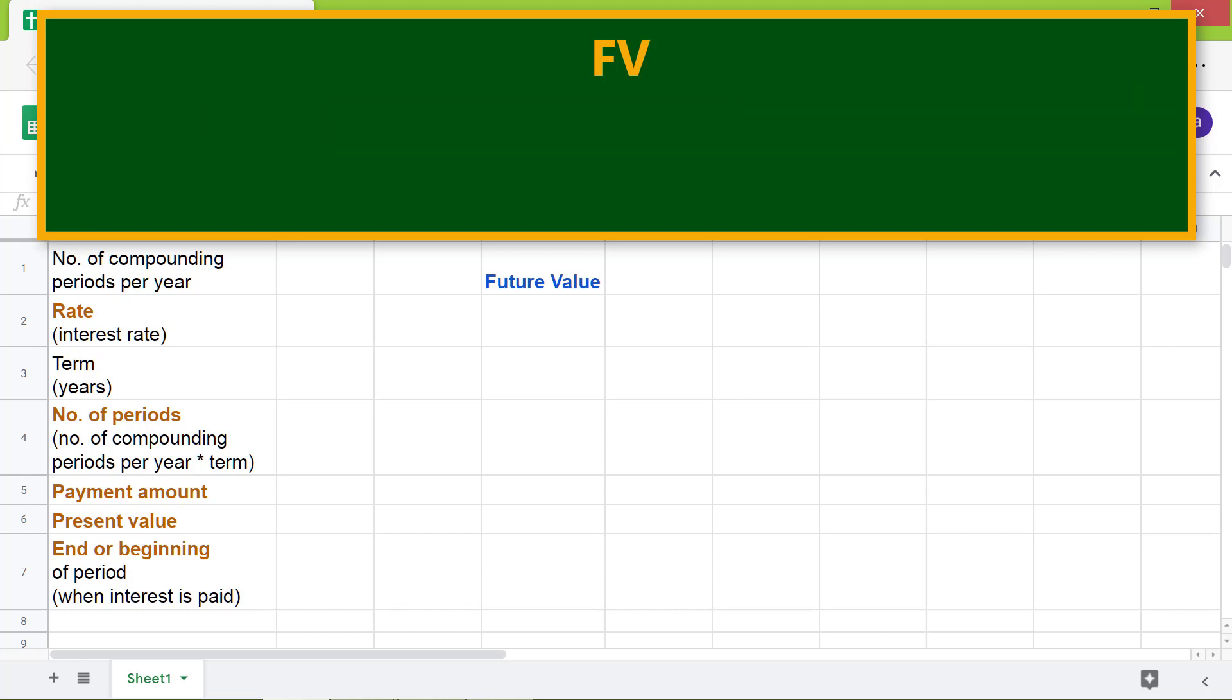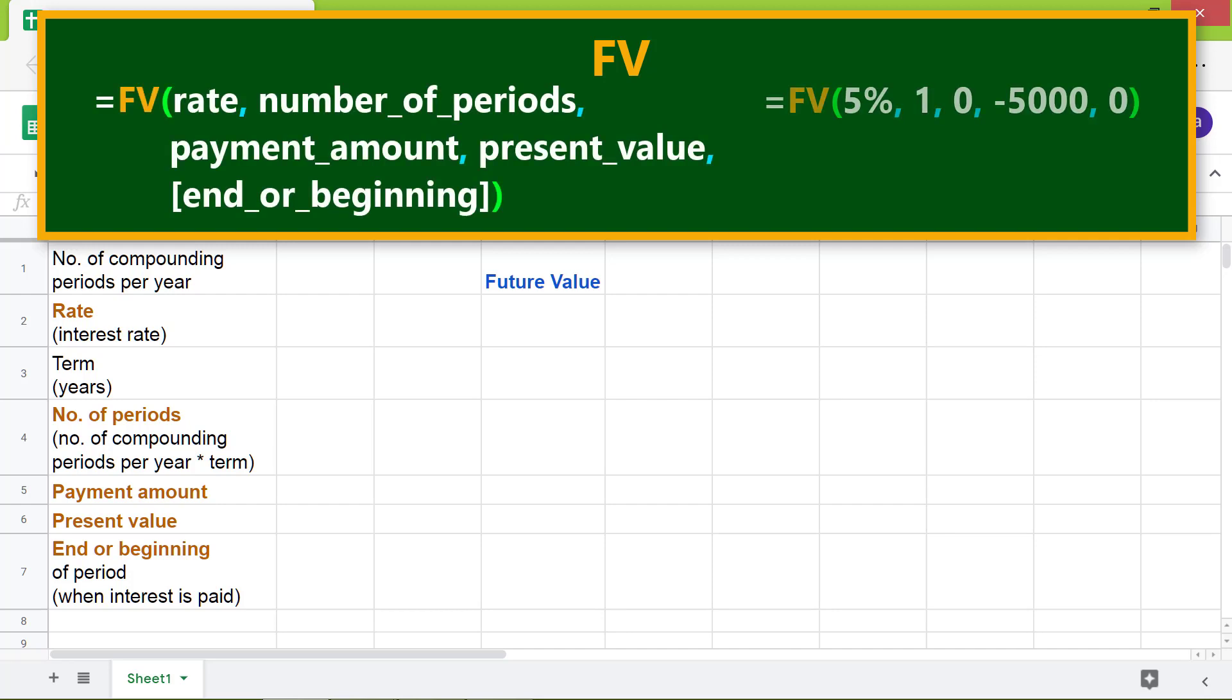Here's the format of the FV function. Let's look at an example. Rate is the interest rate for compounding period. Number of periods is the product of number of compounding per year and term. In this example, it is one because compounding is annual and term is one year. Payment amount is the amount paid per period. In this example, it is zero because of one lump sum investment.